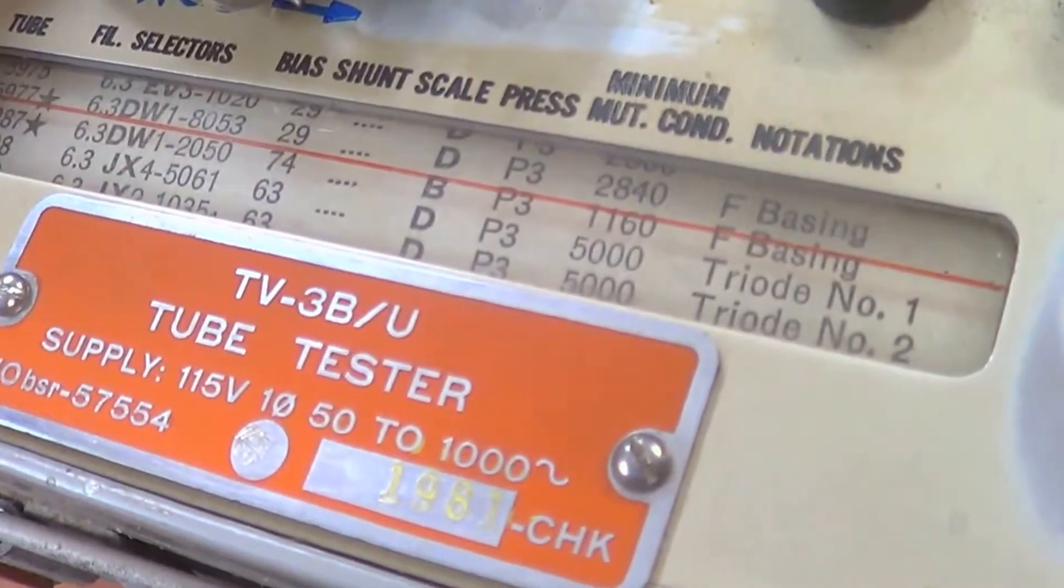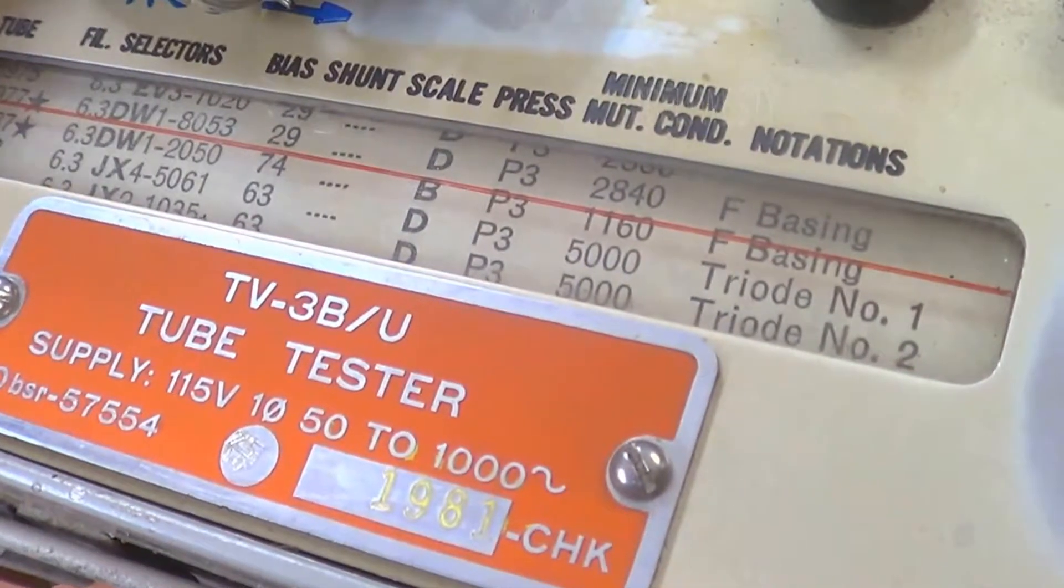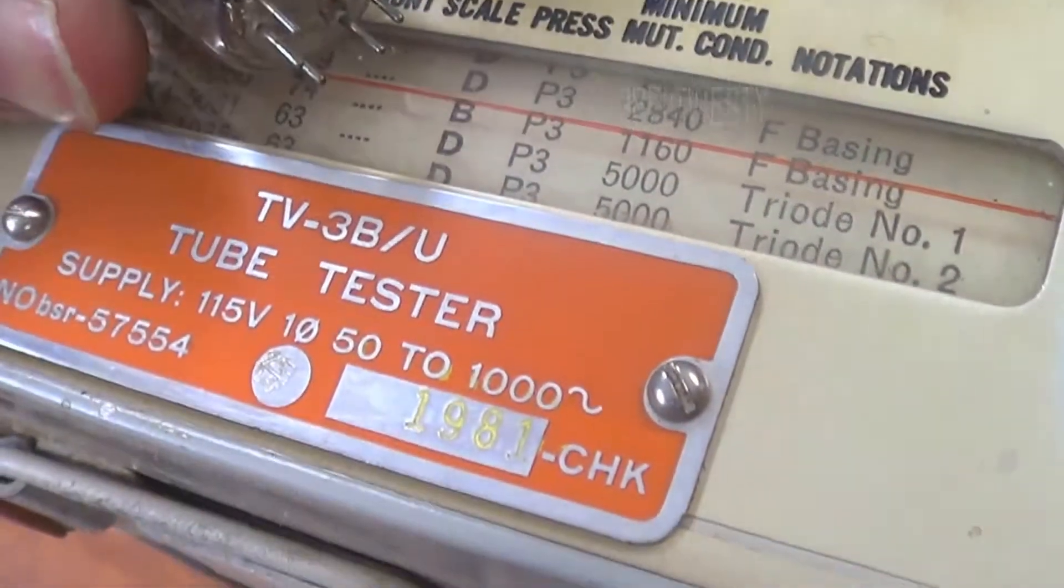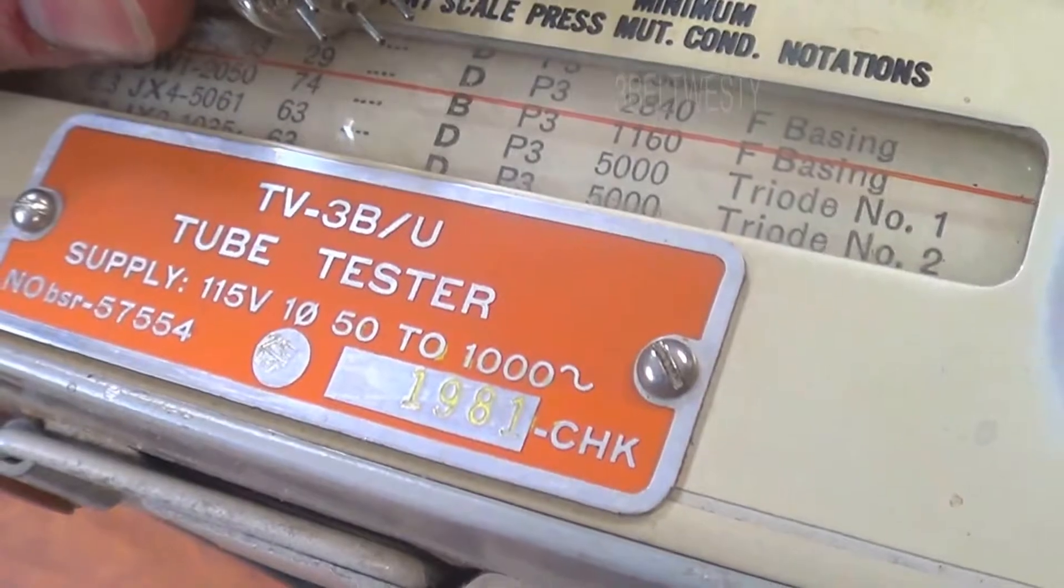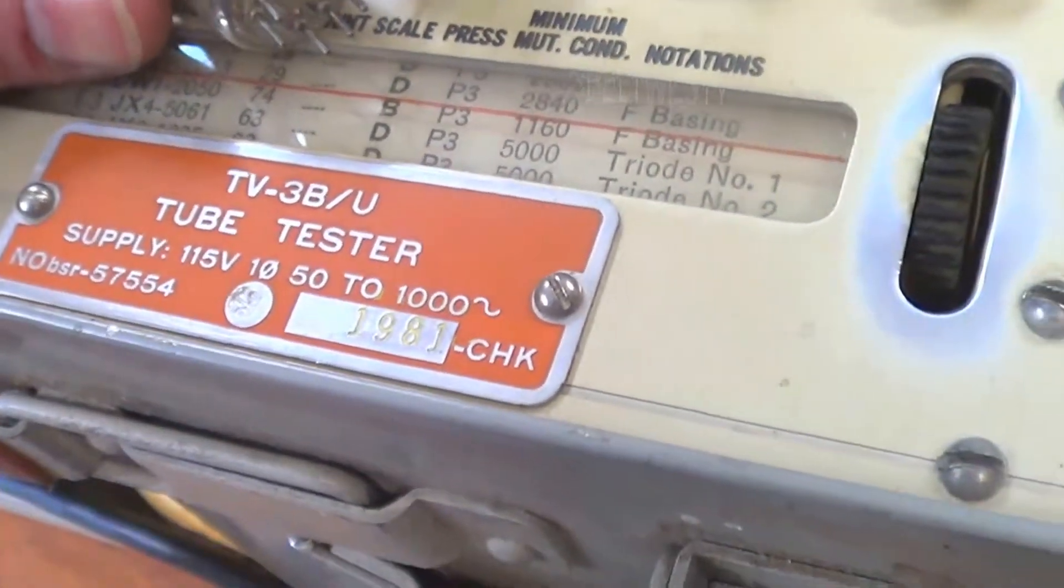This is a TV 3B/U which was upgraded from 1949 to 1952, a Navy ships tube tester.